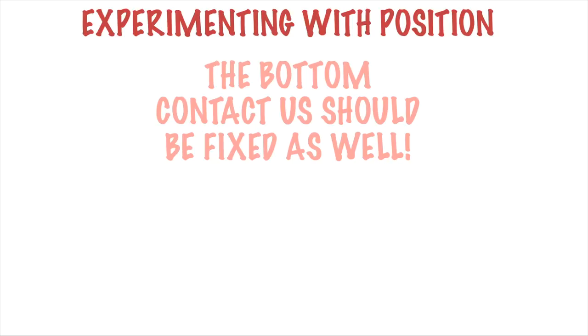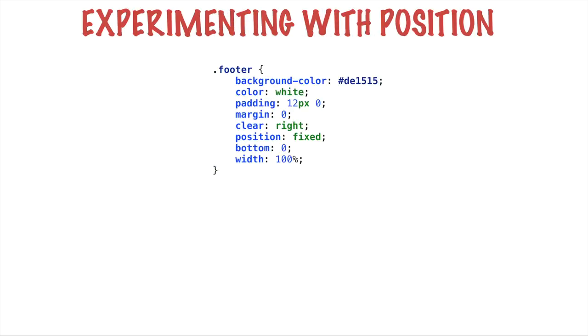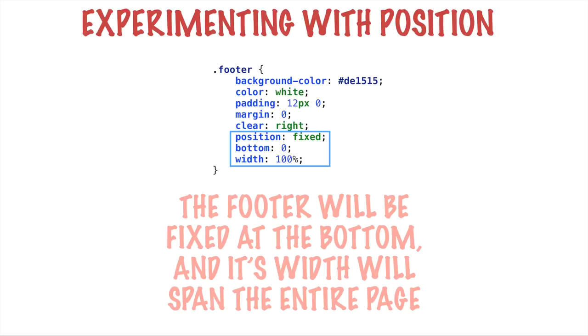Just as we fixed the top header, it makes sense that the bottom footer should be fixed to the bottom as well. This way, the browser viewport will always be flanked by the header at the top and the footer at the bottom, so important information in both will always be available to the user. Go ahead and update the CSS for the footer to include three properties: position: fixed, bottom: 0, and width: 100%. This means the footer will be fixed to the bottom of the viewport, its width will span the entire page, and bottom: 0 means zero pixels from the bottom.